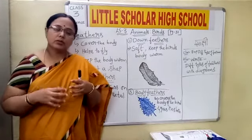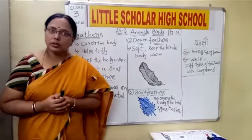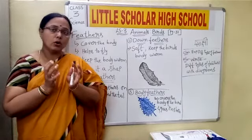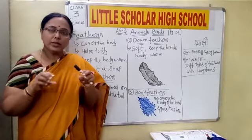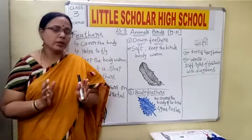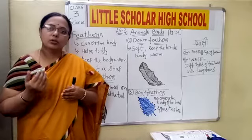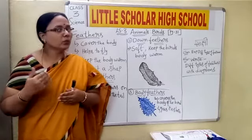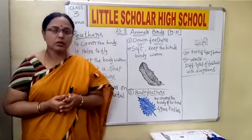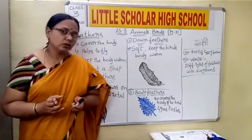In our previous class we discussed that birds are of different color, size, and shape. We also discussed that the light feathers, the hollow bones, and the streamlined body help birds to fly. They move from one place to another in search of food, to protect themselves from bad weather conditions, or for the process of reproduction. We also saw two strokes — the upward stroke and the downward stroke.